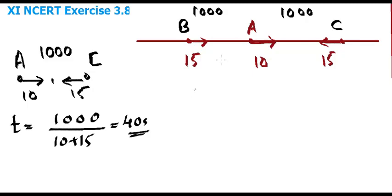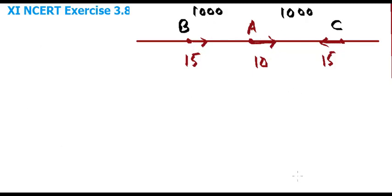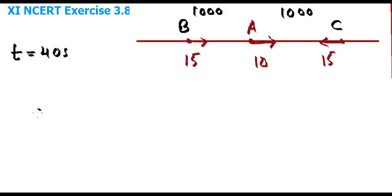So in that 40 seconds, B should reach A. That's the point. Now we have a time limit of 40 seconds. In these 40 seconds, what should happen between B and A?